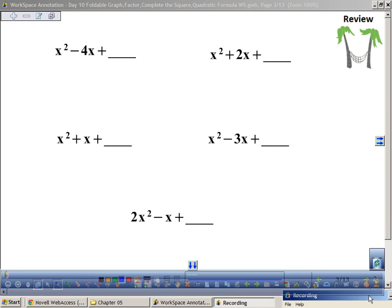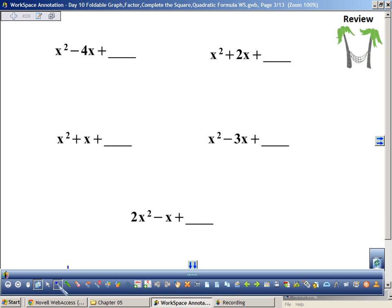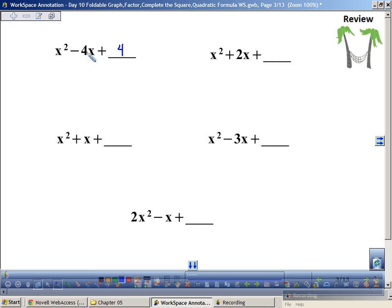Review before we use all four methods to solve a quadratic equation. Let's review from yesterday. What would C be for this one to make a perfect square trinomial? Four. Right, because you take negative four, you divide it by two, and you square it.